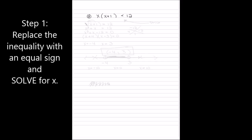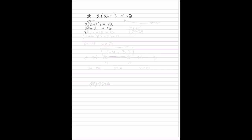Let's look at another example. First, I replace the inequality with the equal sign and solve. I need to put this in standard form, so I distribute x, giving me x squared plus x equals 12. I move the 12 to the other side, then factor using two sets of parentheses. I need a number that when multiplied gives negative 12 but when added gives 1 — those are 4 and negative 3. That gives me x equals negative 4 and x equals 3.